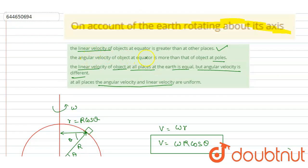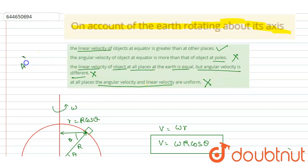The second option is wrong because angular velocity is the same at all places. The third option — that linear velocity of the object is equal at all points on Earth — is also wrong. The fourth option — that both angular and linear velocity are uniform everywhere — is also wrong. So the only correct option is A.